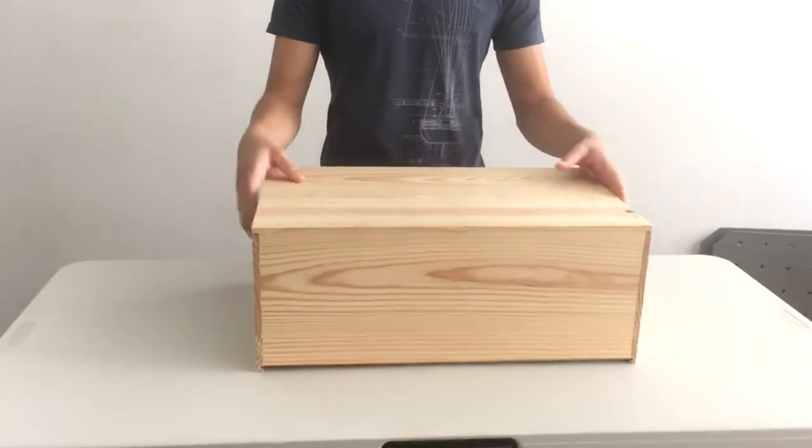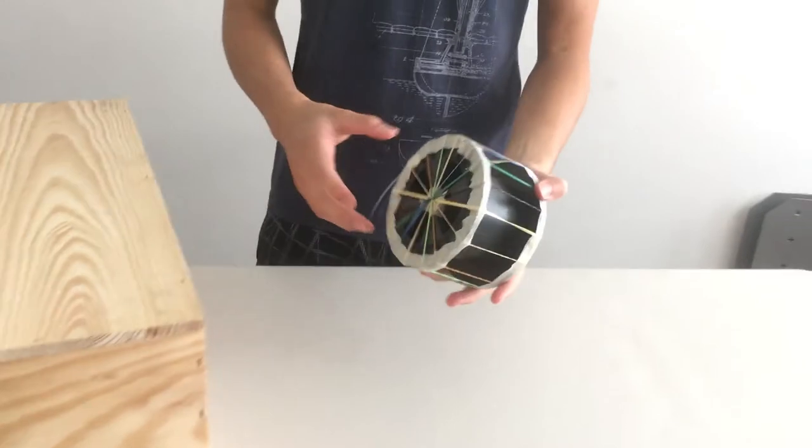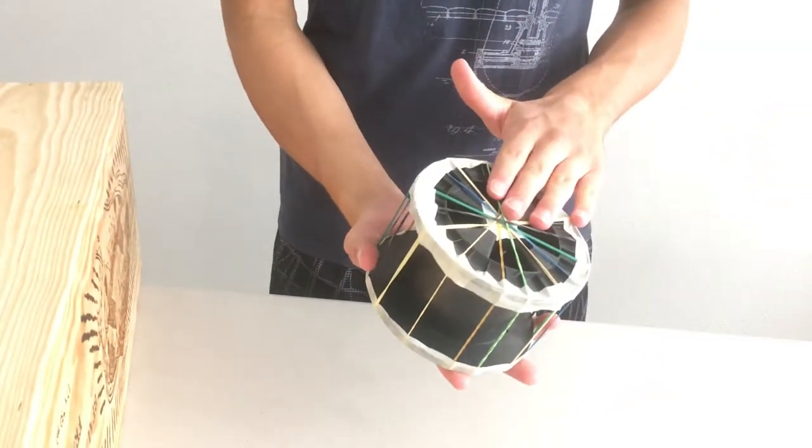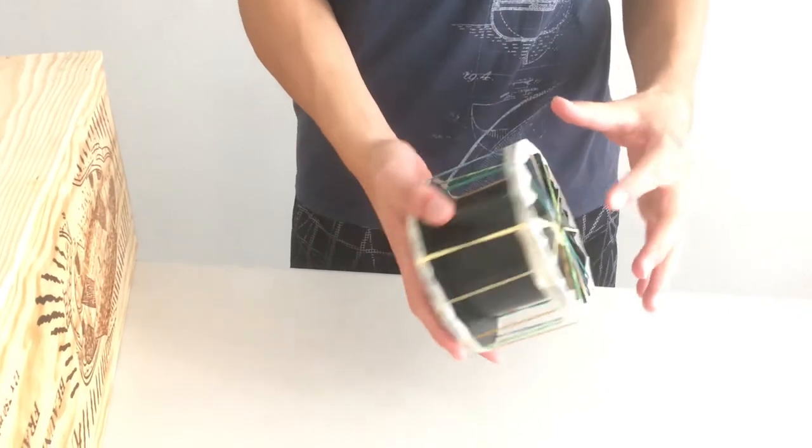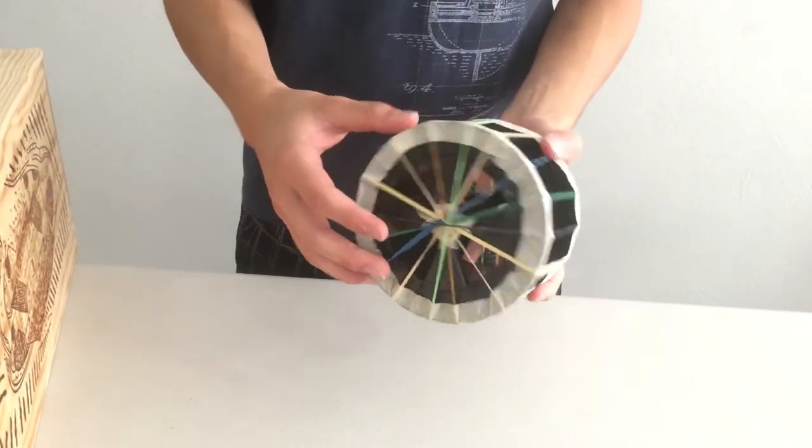Now without further ado, let's get started. The first instrument I'm going to be showing you guys is this one right here. I guess it looks kind of like a circular guitar. What I did is I basically took a spool and I took about 16 rubber bands of different sizes and different widths and I strung them together like this.